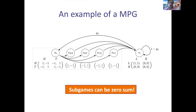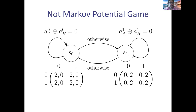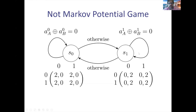In game theory, besides potential games there are classes called weighted or ordinal potential games — this is the analog here. These games have similar properties. Let's see the last unfortunate scenario that makes things complicated. Suppose you have two players and two states. At state s₀, the utility of both players does not depend on their actions at all — for all possible scenarios, player one always gets 2 and player two always gets 0.